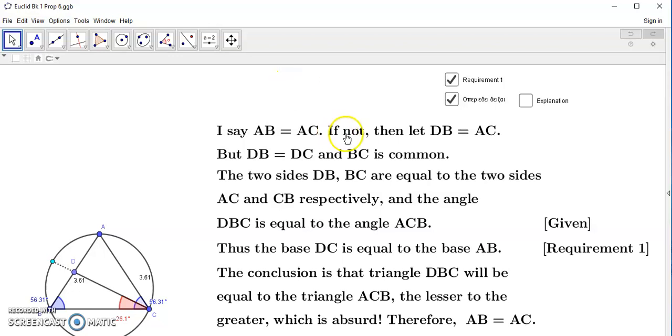And if not, then let DB, this line here, this DB line here, let it be equal to AC. Let this line here be equal to AC, and it doesn't matter which DB you choose. Then we know that DB is equal to DC, right? Because now we are saying that this line is not equal to this line, given these two blue angles are equal, but rather DB is equal to AC.